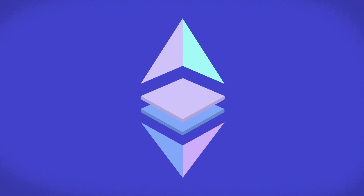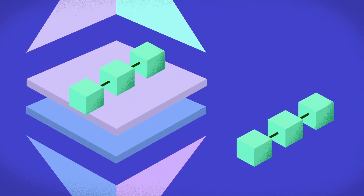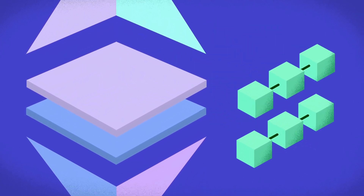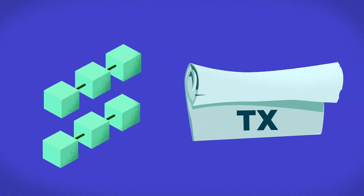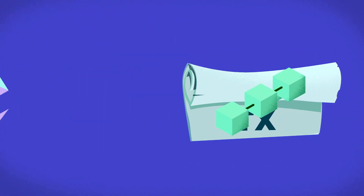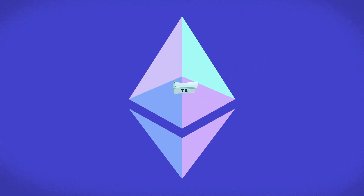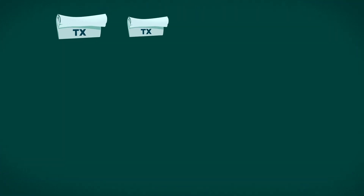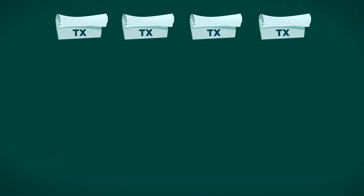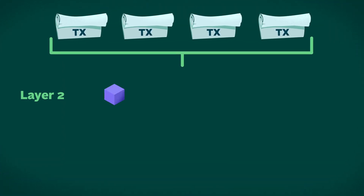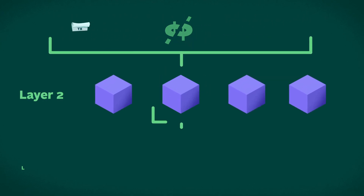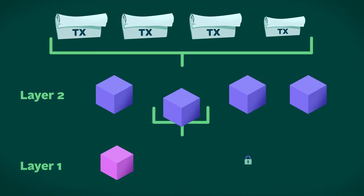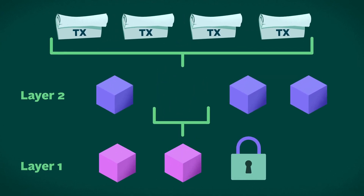Simply put, they are a type of scaling solution that processes transactions on another blockchain, known as layer 2s, and then rolls them up into batches for inclusion on the main blockchain. This reduces the load on the main blockchain and provides the benefits of making transactions faster and cheaper, while still obtaining the security of the main layer 1 chain.